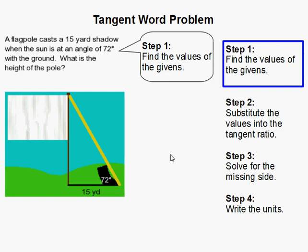So, a flagpole casts a 15 yard shadow when the sun is at an angle of 72 degrees with the ground. So, this is the shadow, okay, so here's the flagpole, the shadow is over here, and this yellow is representing the sun. So, that means this angle right here is 72 degrees. What is the height of the pole? So, we need to find this here.